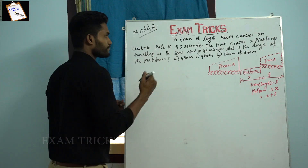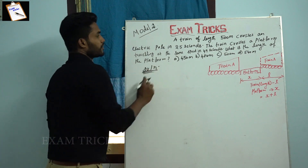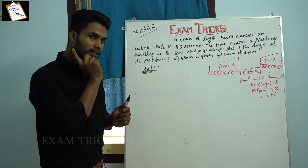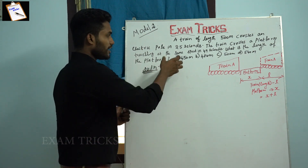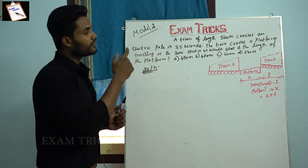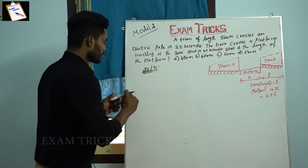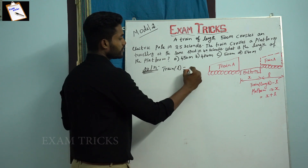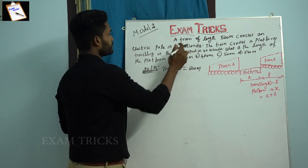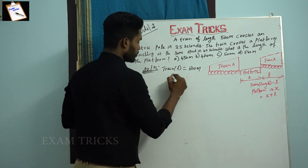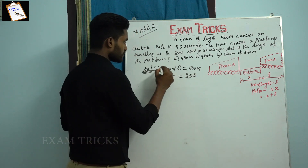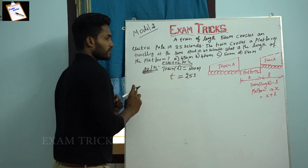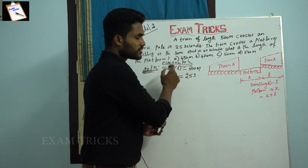Let's put this into an example. A train of length 500 meters crosses an electric pole in 25 seconds. The same train crosses a platform in 49 seconds. What is the length of the platform? First case: electric pole crossing — time is 25 seconds.